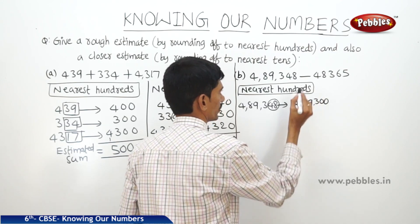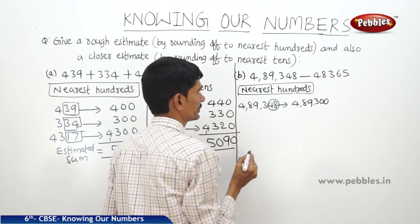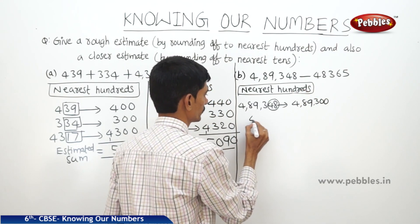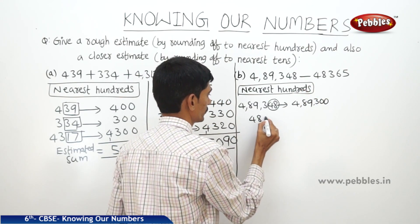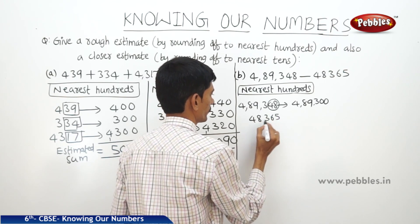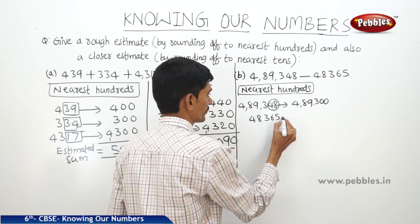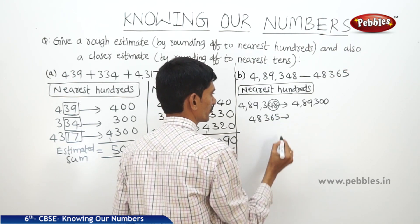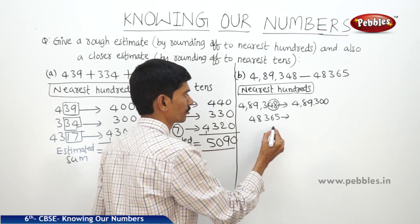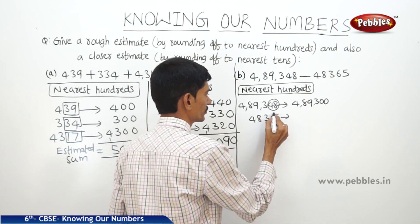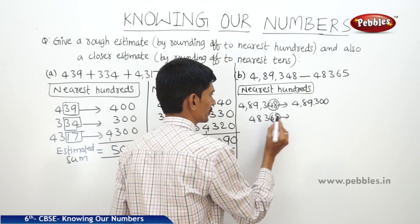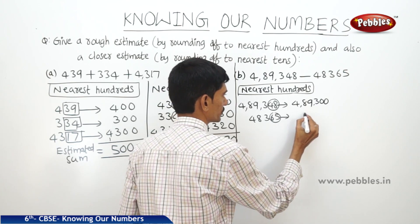And next, 48,365 — this will be rounded off to 48,400.